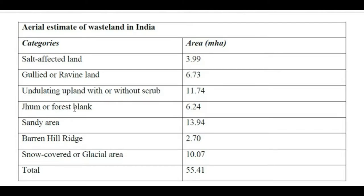Another wasteland type is jhum or forest fallow — areas affected by shifting cultivation, which was mentioned earlier as a cause of forest degradation. Tribals select a forest patch, burn it along with the trees, then move to the next patch after 3-4 years when the nutrient level decreases. These abandoned patches become barren with decreased fertility levels, making agriculture impossible. This accounts for around 6.24 million hectares.